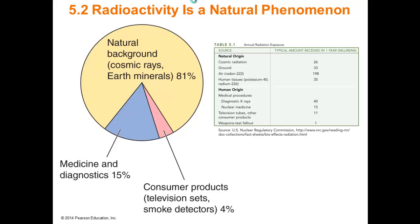If you look at this table on the right showing annual radiation exposure, the typical amount received in one year is measured in milli-rems — 26, 33. Air is 198. Medical diagnostic x-rays, if you just get one, that's about 40. But if you receive a much higher dose, that's when problems occur. So if you're a radiology technician, that's why you wear the little pin badge — it clocks how many milli-rems of radiation you've been exposed to. Over time, after you've received so much, it becomes unsafe for you to absorb any more radiation.